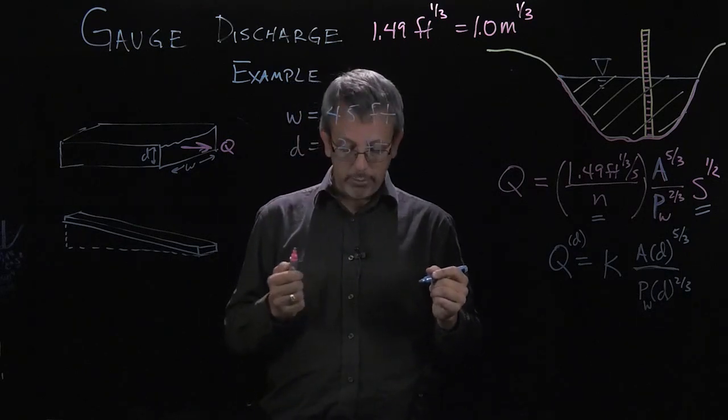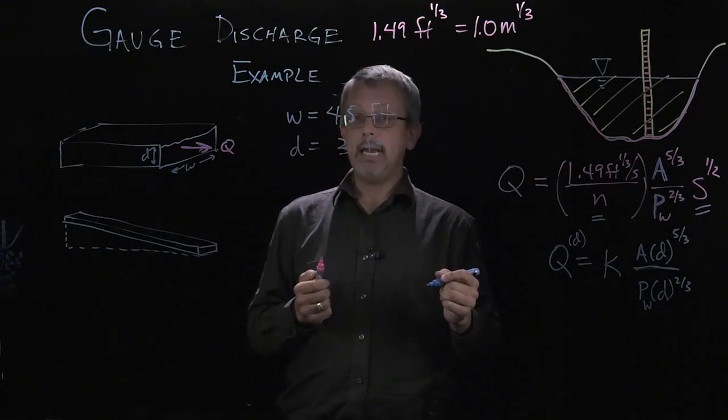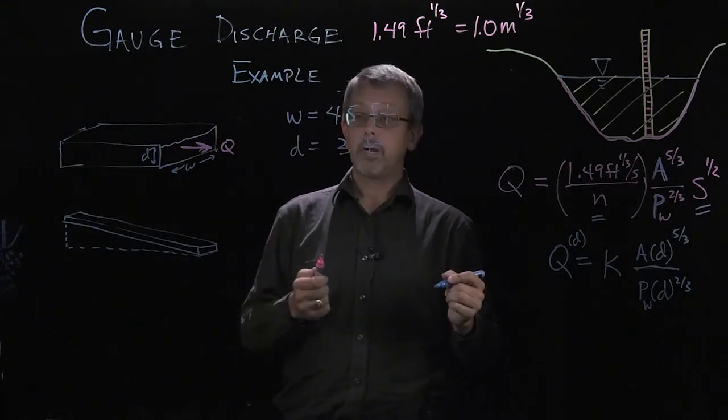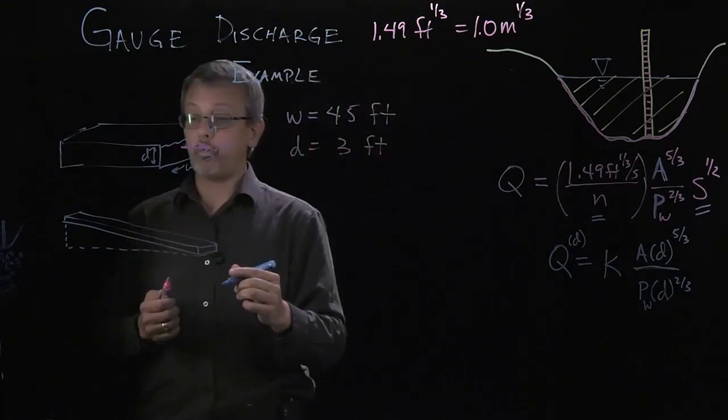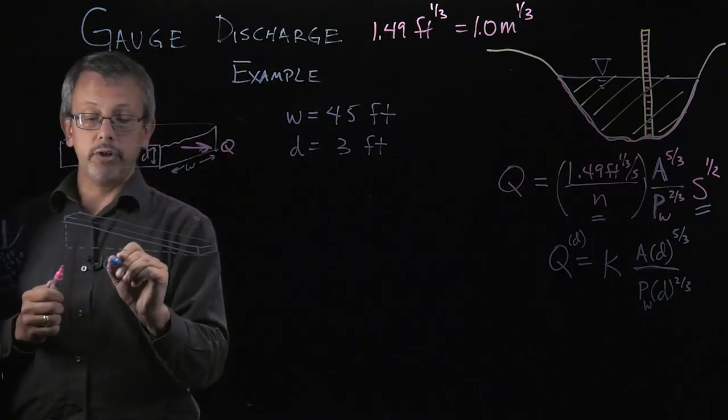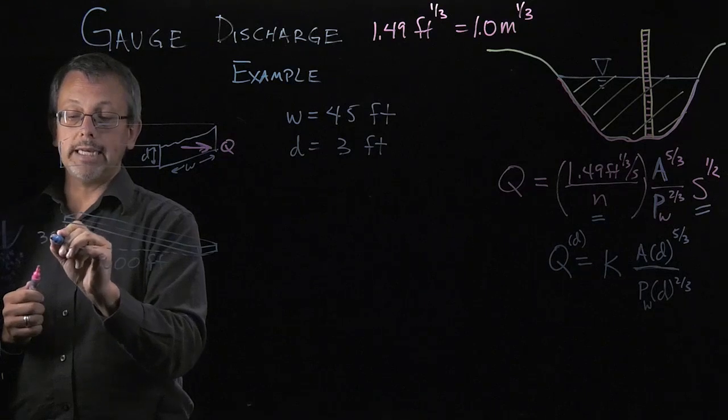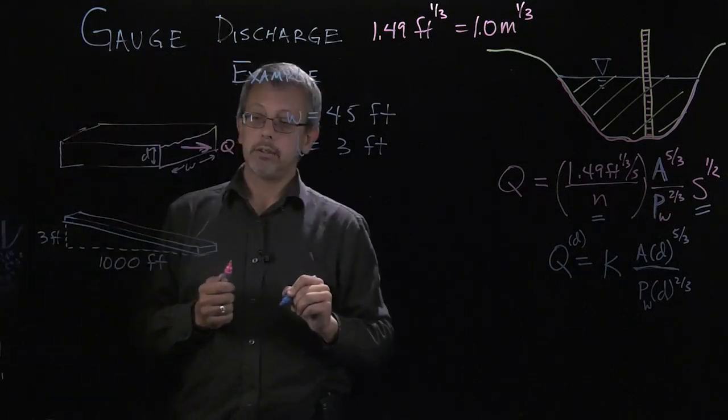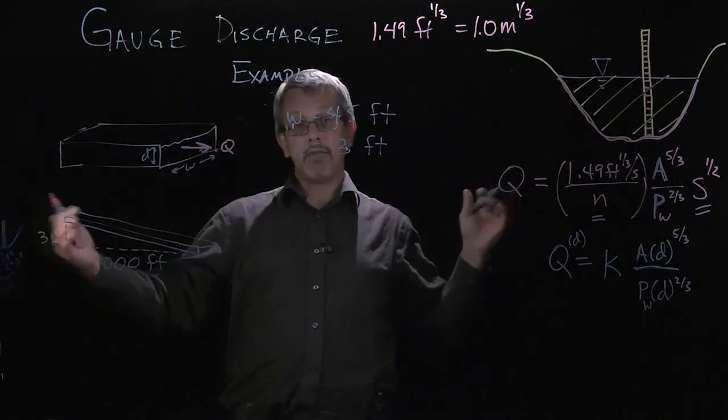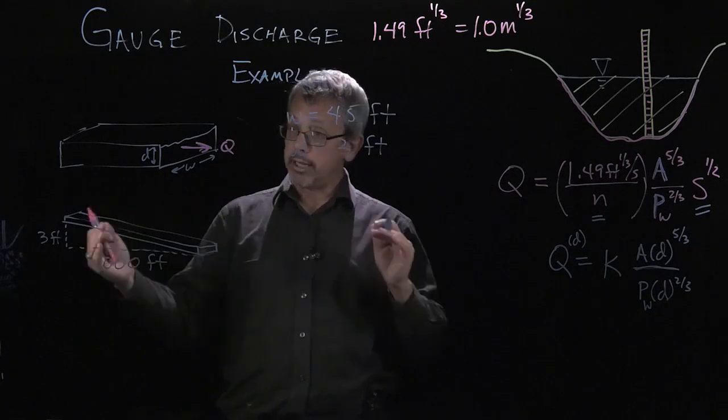So we have this width, we have a depth, we're also going to need a slope of the raceway. So we go and we look at the raceway and we measure and we realize that for a section near where we're measuring, it rises a value of three feet over a length of a thousand feet, a horizontal length of a thousand feet.